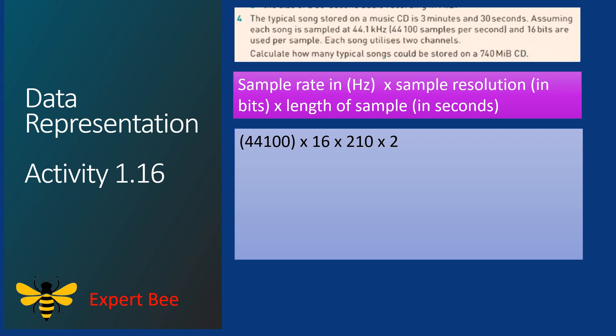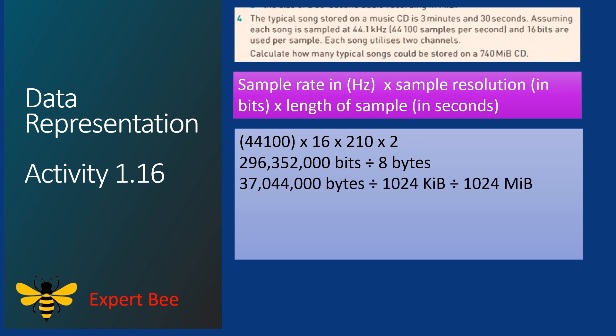First, we convert 3 minutes 30 seconds to seconds: 3 × 60 = 180 + 30 = 210 seconds. Then: 44,100 × 16 × 210 × 2 = 296,352,000 bits. Dividing by 8 gives 37,044,000 bytes. Dividing by 1024 converts to kilobytes, and dividing by 1024 again converts to megabytes.